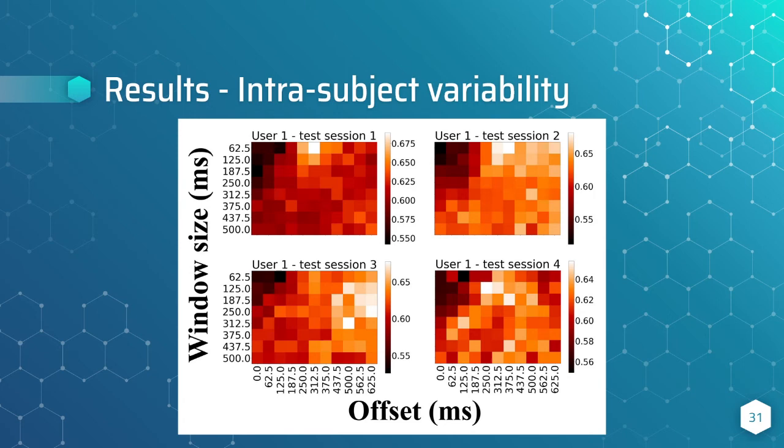This is the key to understand why a recurrent model performs better. For example, if we get the best accuracy at 600ms, it doesn't mean that only the sample at 600ms has the full information, but that the previous signal from 0 to 600ms has determined the current state in the LSTM, and thus at 600ms it can give the best prediction.